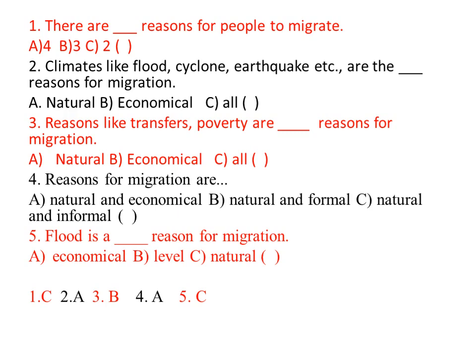Flood is a dash reason for migration. What is the aim of migration — environmental or ethical options? Flood is a natural reason for migration. C is the answer.